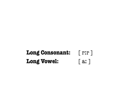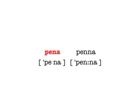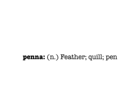The IPA shows length by using a symbol that looks a little like a colon, telling you to hold the sound before it longer. When this is used with consonants, it's common for the consonant symbol to be written twice with the colon in between. Vowels are never doubled in the IPA. For example in Italian, the words 'pena' and 'penna' are pronounced exactly the same except that 'pena' has one N — a short N sound — and 'penna' has two Ns — a long N sound. That little change totally changes the meaning of the word from 'pena', meaning pain, to 'penna', meaning either feather or pen, depending on the context.